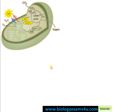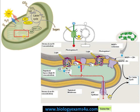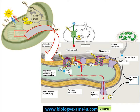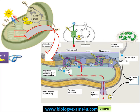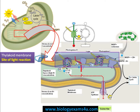Now let's examine the exact location of each reaction in photosynthesis: the light-dependent reaction, the light-independent reaction, and the photolysis of water. The thylakoid membrane is where light reaction, or light-dependent reaction, takes place. Photosystem I and Photosystem II, along with all other proteins and electron carriers, are located on the thylakoid membrane. Therefore, the exact location of the light reaction is the thylakoid membrane.